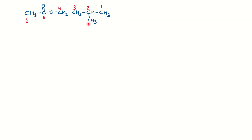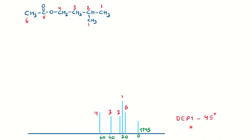Taking an example: the molecule has two chemically equivalent CH3 groups giving one signal, one CH, two CH2 groups, one more CH3, and one quaternary carbon. In DEPT at 45°, all protonated carbons appear — CH, CH2, and CH3 — so we expect five signals for the protonated carbons.